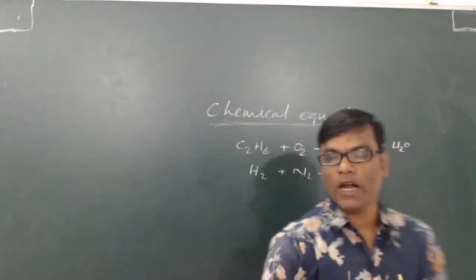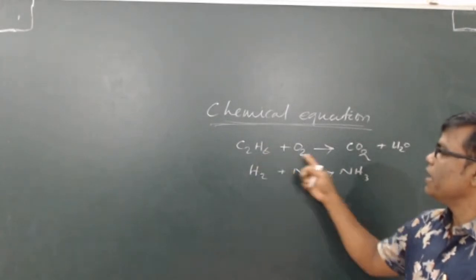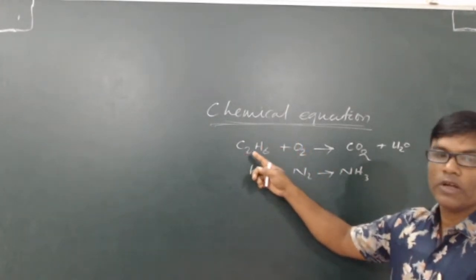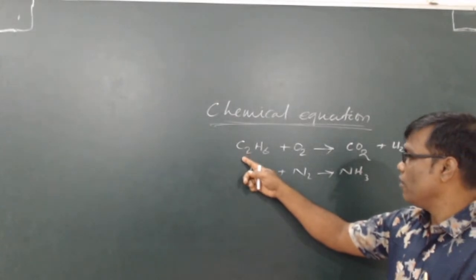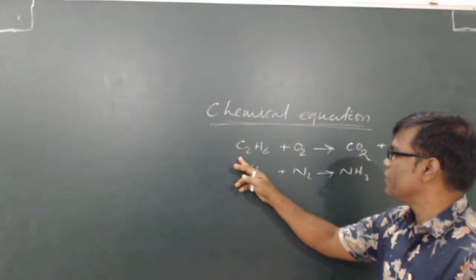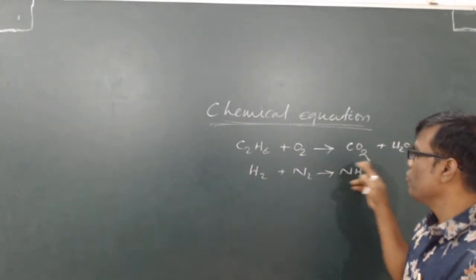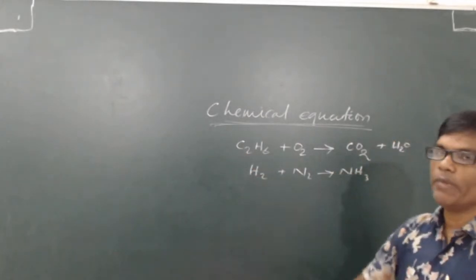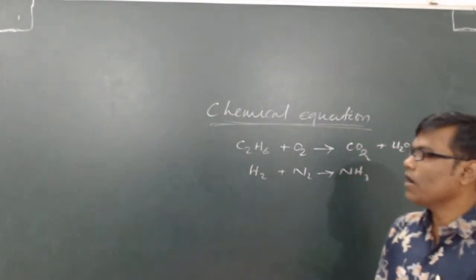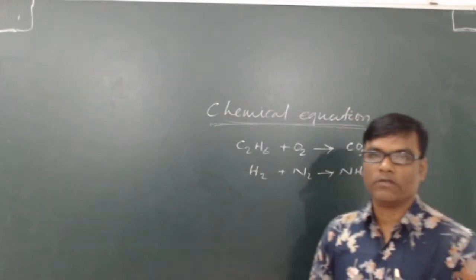These are chemical equations, as the chemical reaction is written in terms of chemical symbols and formulae. When a chemical reaction is represented by using formulae and symbols, then it is called a chemical equation. Now, chemical equations are of two types.